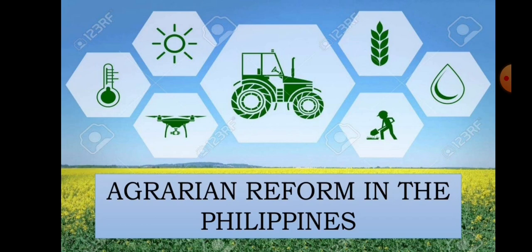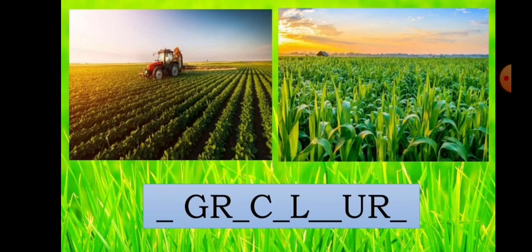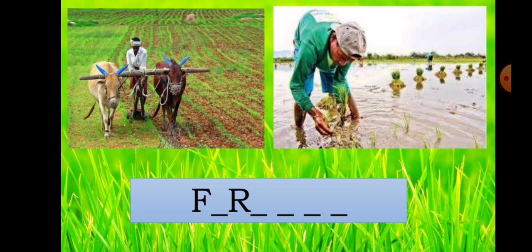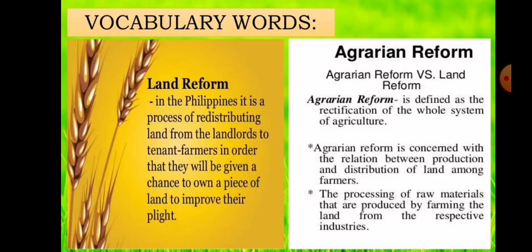Agrarian has something to do with agriculture and farmers. I have two concepts to dig deeper into our discussion. First, we have land reform, and second, we have agrarian reform. In the Philippines, land reform is a process of redistributing land from the landlords to tenant farmers so that they will be given a chance to own a piece of land to improve their plight.